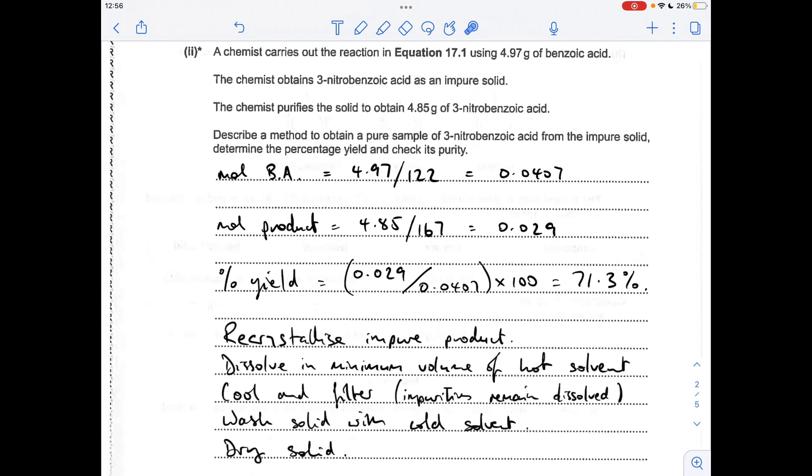Moving on to purification of the solid, it's done by recrystallisation. The essentials of that process: dissolve in a minimum volume of hot solvent, cool and filter. The impurities remain dissolved, so the solid we want is kept in the filter paper. Wash with cold solvent, then allow the solid to dry.